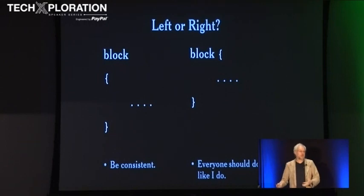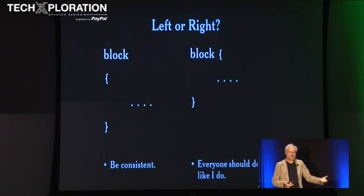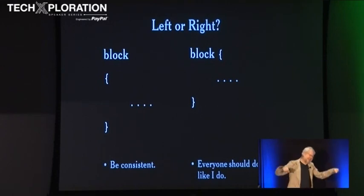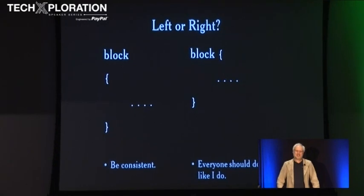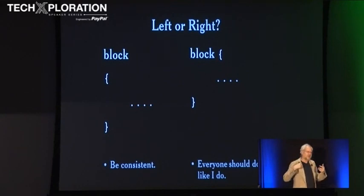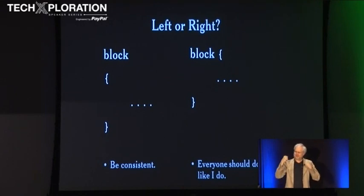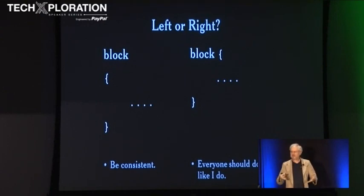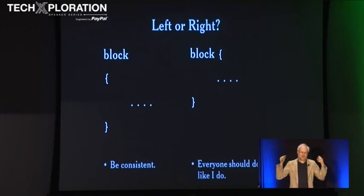If someone used to putting the curly brace on the left goes to work for a shop that puts them on the right and they say 'now you've got to put them on the right,' he's going to start to cry. He'll start coming up with all the reasons for why it's so much better on the left, and the arguments don't make any sense because there's not a good reason. If he can hear himself saying these things, he may even be aware of it, and that just makes him cry more. There's a righteous anger going on, but there's absolutely no truth or evidence to support it. And as programmers, we do this all the time.